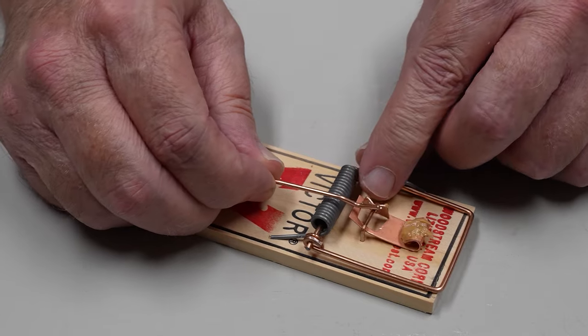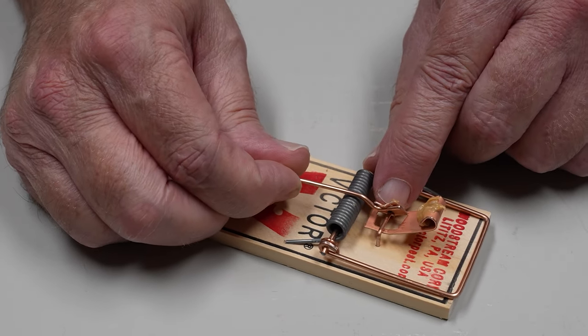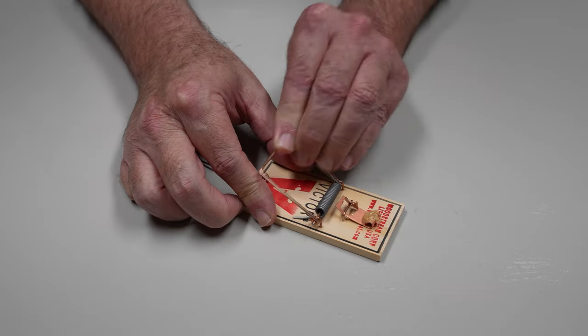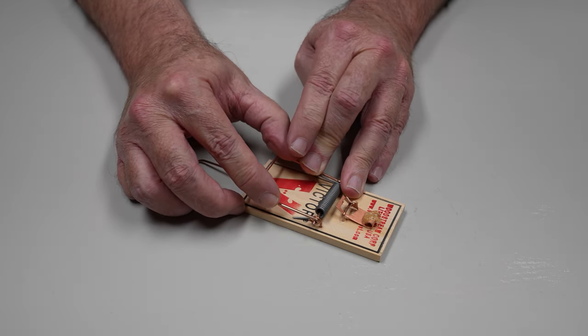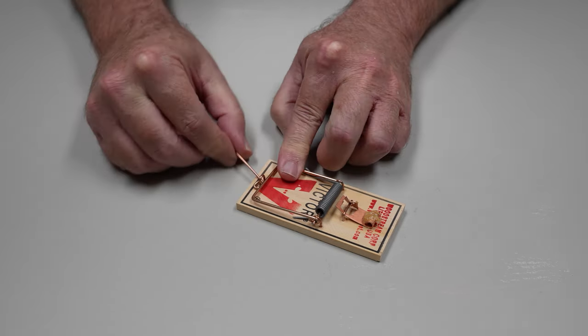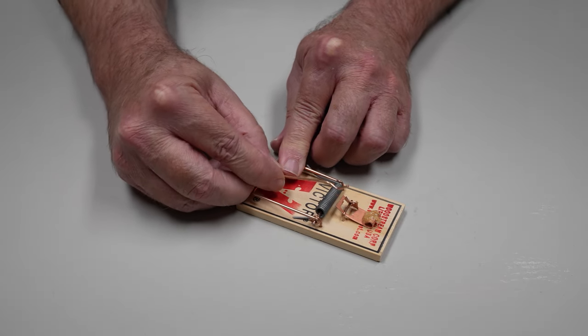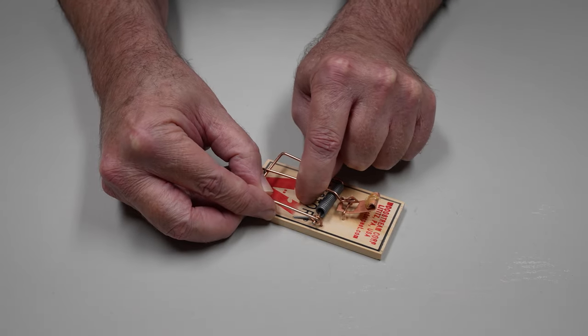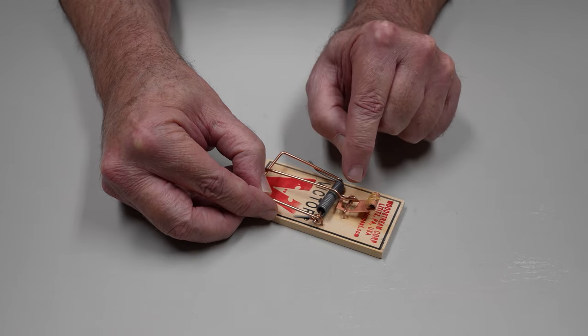The idea is that you're going to hook this bar under this piece of the bait pedal. Once we have the bait on, we're going to bring this spring bar back and you can feel how much tension there is on that. We're going to set this bar up over the top of this spring clip here. We're going to leave a little tension on here just so it keeps it hooked under here.